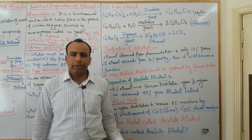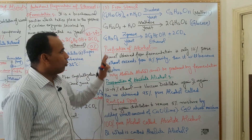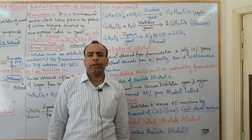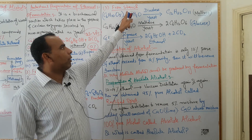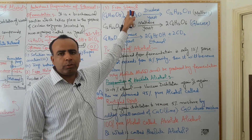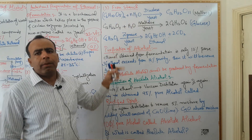My dear students, the next question is: how is ethanol prepared by fermentation of starch? This is our next topic. The formula of starch is C6H10O5, while the formula of glucose is C6H12O6.